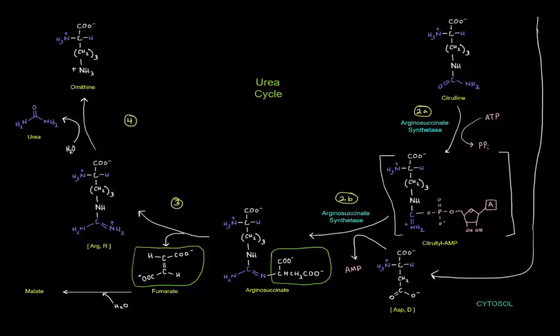And that is going to be catalyzed by arginosuccinate lyase. So it's going to cut arginosuccinate into arginine and fumarate. And that fumarate can be converted into malate by an enzyme called cytosolic fumarase. It's just fumarase, just in the cytosol.